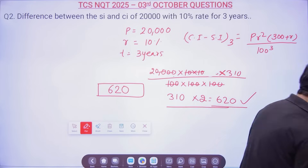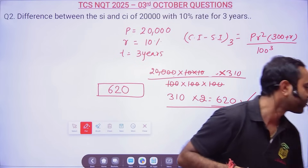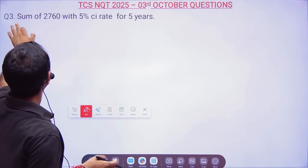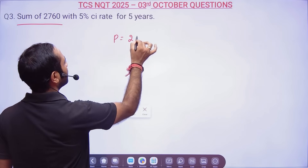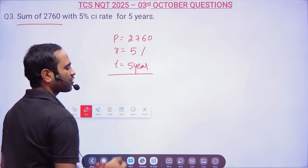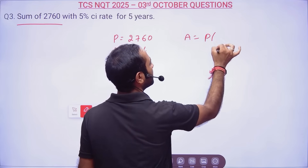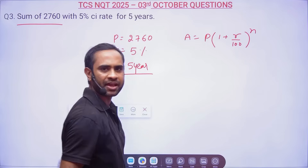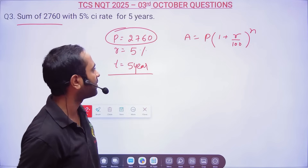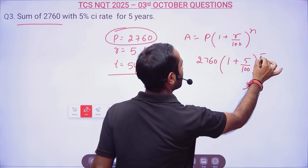I hope the working is clear to you. Moving towards question number 3: a sum of 2760 rupees is invested at a rate of 5% for 5 years. In such questions they ask you to find either the amount or the compound interest. If they ask for amount, the formula is P × (1 + R/100)^N. So after 5 years: 2760 × (1 + 5/100)^5 = 2760 × (21/20)^5.